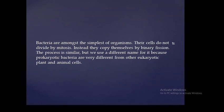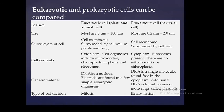Bacteria are amongst the simplest of organisms. Their cells do not divide by mitosis; they divide by binary fission. Eukaryotic and prokaryotic cells can be compared by size: eukaryotic cells range from 5 to 100 microns, while prokaryotic cells range from 0.2 to 2 microns. In plants and fungi, the cell membrane is surrounded by a cell wall as the outer layer.